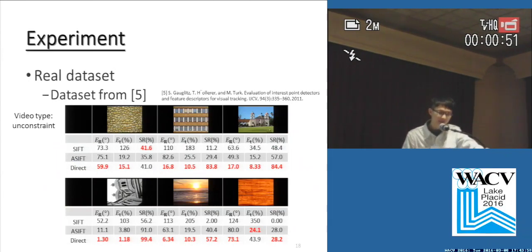The second dataset is the real dataset from the previous IJCV work. This table shows the result of one of the video types, unconstrained free motion. In this table, we can see that our method performs better than the others.